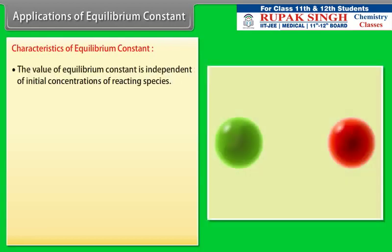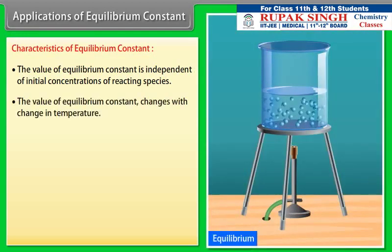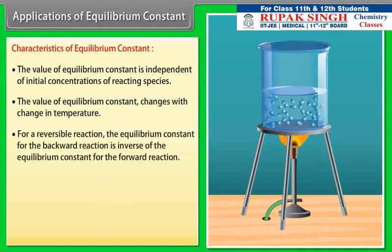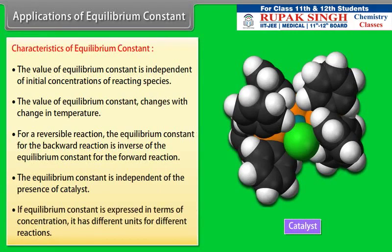The equilibrium constant is independent of the initial concentrations of reacting species. The value of the equilibrium constant changes with change in temperature. For a reversible reaction, the equilibrium constant for the backward reaction is the inverse of the equilibrium constant for the forward reaction. The equilibrium constant is independent of the presence of a catalyst. If the equilibrium constant is expressed in terms of concentration, it has different units for different reactions.